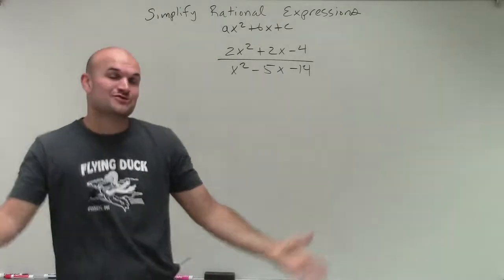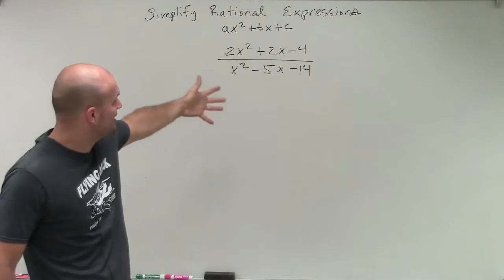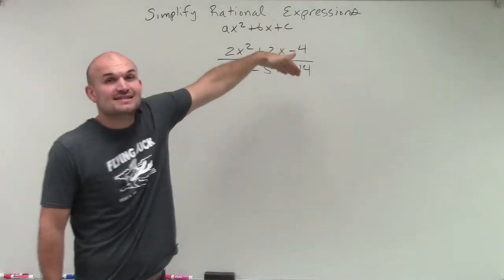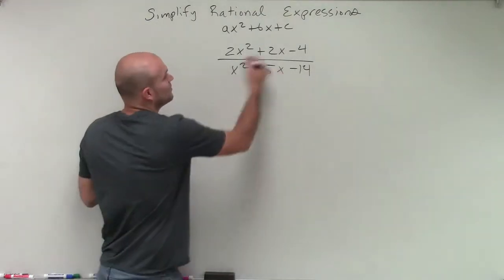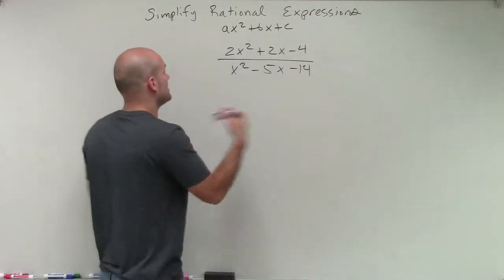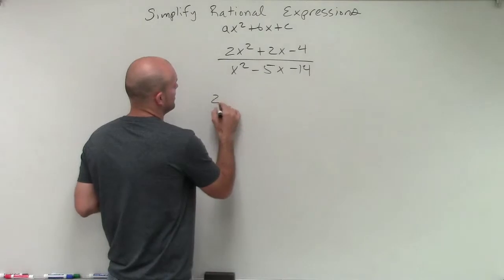So we have another rational expression, and we see a trinomial over another trinomial. We see that there's really nothing special factoring out of these. However, I do notice my numerator does have something they have in common, which we call our GCF, so we can factor it out. And we notice that I can factor out a 2 out of my numerator. You always want to make sure we can do that first.